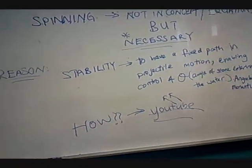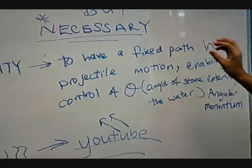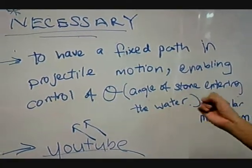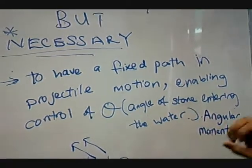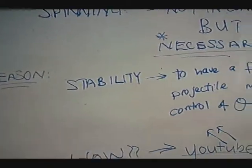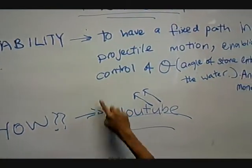Reason why? To provide the ability to have the stone have a fixed path in the projectile motion, and to provide control of theta, as mentioned earlier, the angle of the stone entering the water, which provides it an angular momentum. But how is this ability achieved by spinning the stone? Look at the YouTube video.